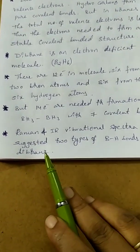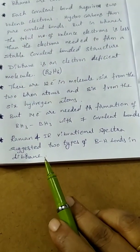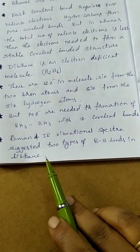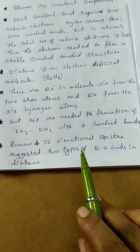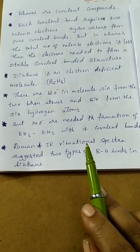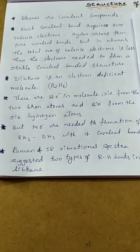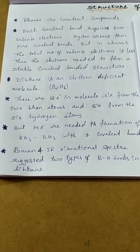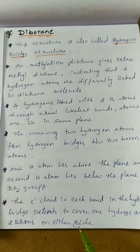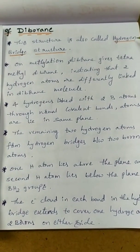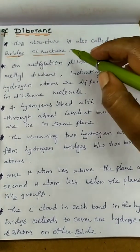Raman and IR vibrational spectra suggest that 2 types of B-H bonds are present in diborane. So B-H bonds exist in 2 types in this structure.